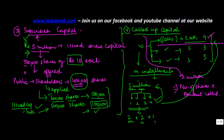If the company has called 4 plus 3, then it's number of shares (constant) into amount called, which is 7 rupees — giving 3.5 million. If you call the entire amount then basically your called up capital becomes equal to the subscribed capital. So this is what subscribed and called up capital means.